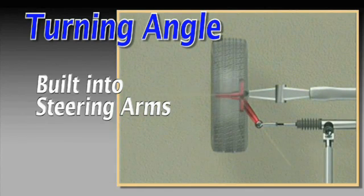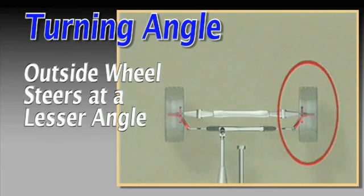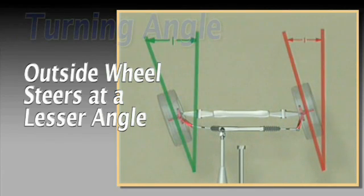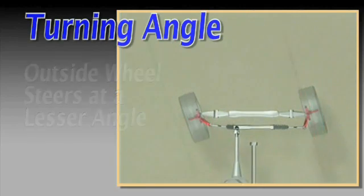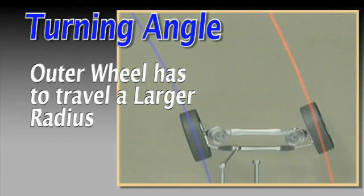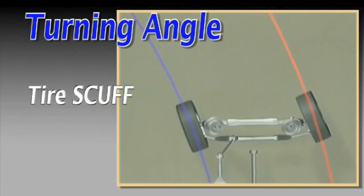Created by the angle of the steering arms, turning angle allows the outside wheel on a turn to steer at a lesser angle than the inner wheel. This is necessary because the outer wheel has to travel a larger radius. Otherwise, the tires may scuff when the vehicle turns.